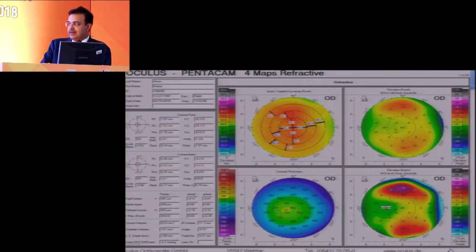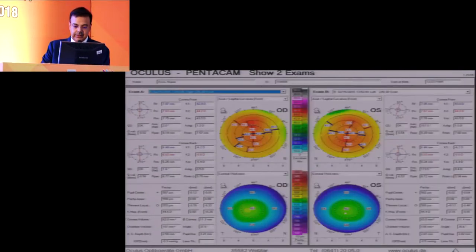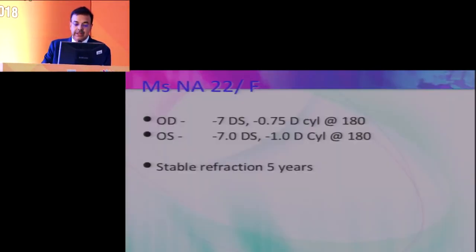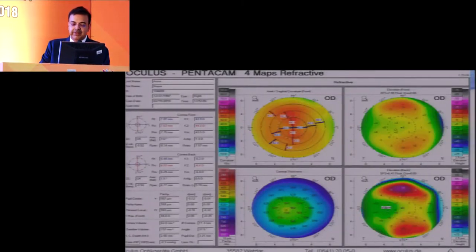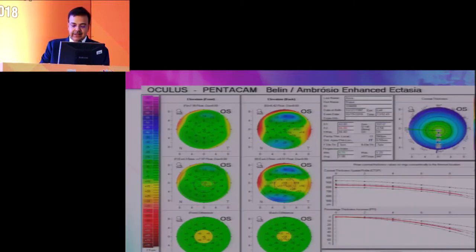See your AC depth is only 2.56. So you can't do an ICL. And what's her age? She was 22 and she has a stable refraction for 5 years. That was the amazing thing. I wouldn't mind doing a smile for this patient. But again the bellend I would have loved to see. Present day we should look at the bellend and take a call. We had these maps but we did not have the bellend Ambrosio when I saw these maps. So we went ahead and worked her up and we did the pentacam ourselves and this is what came out.